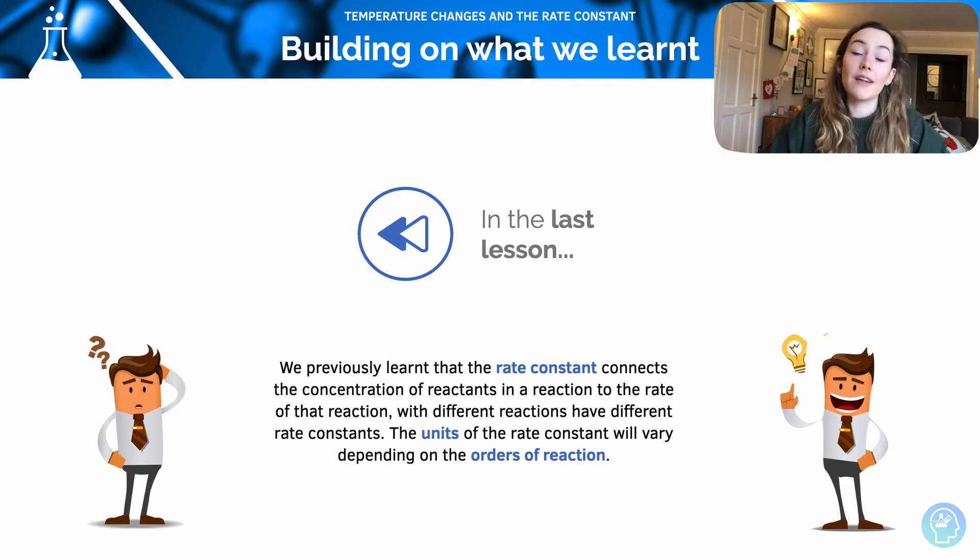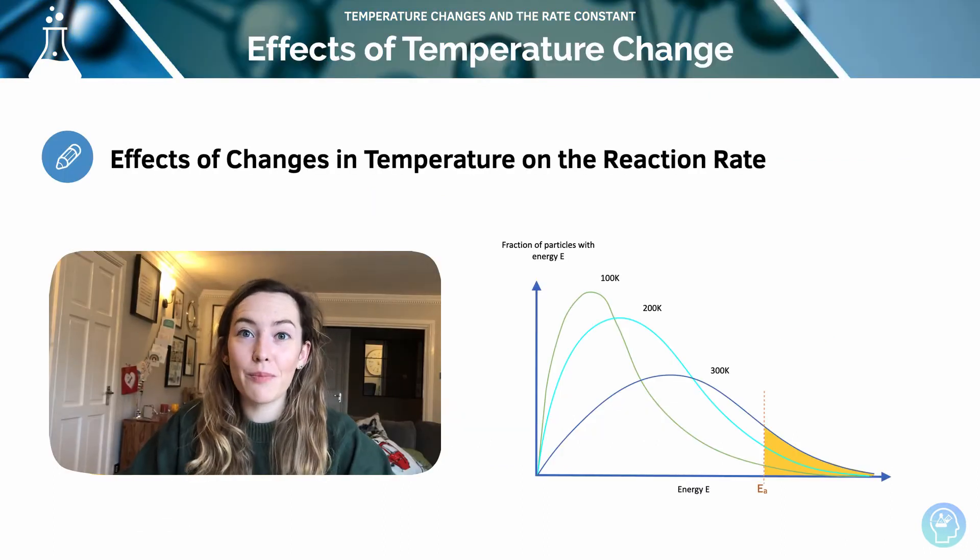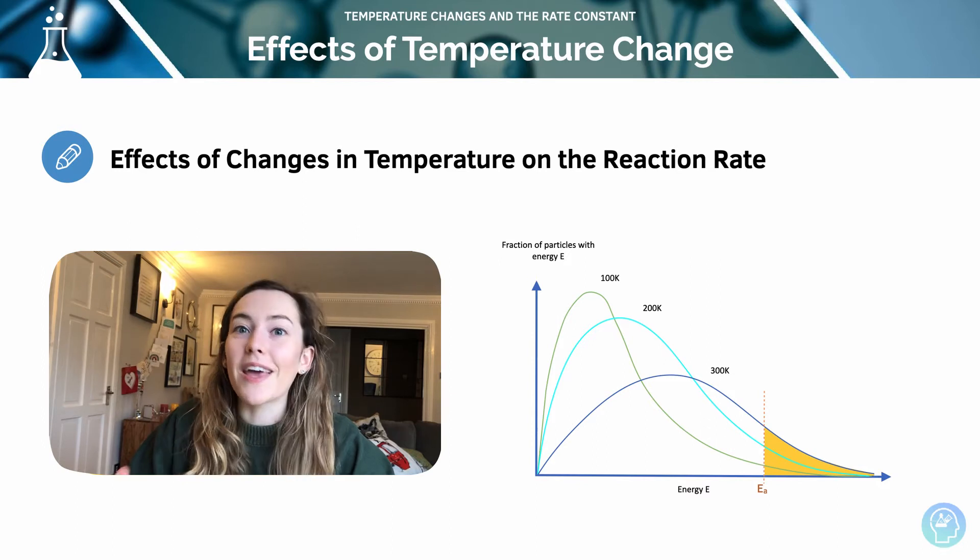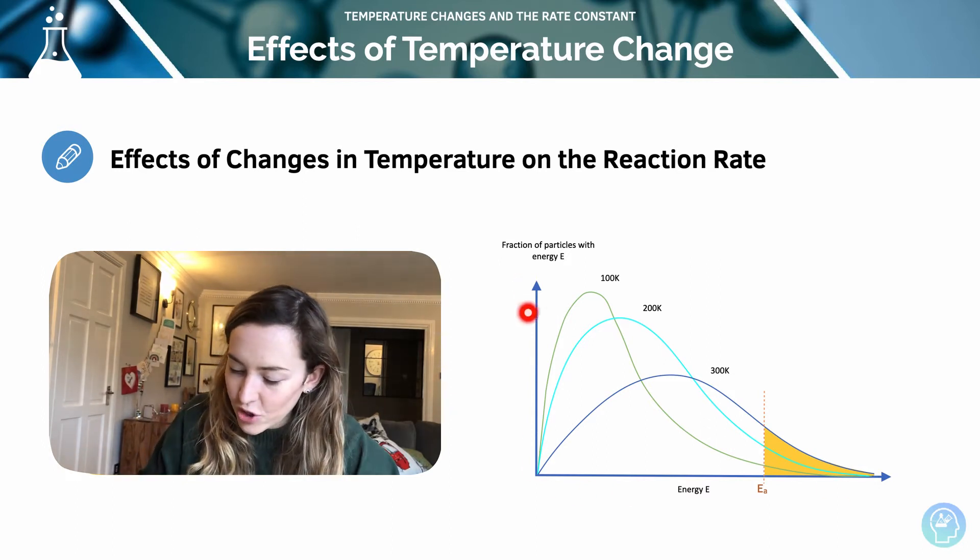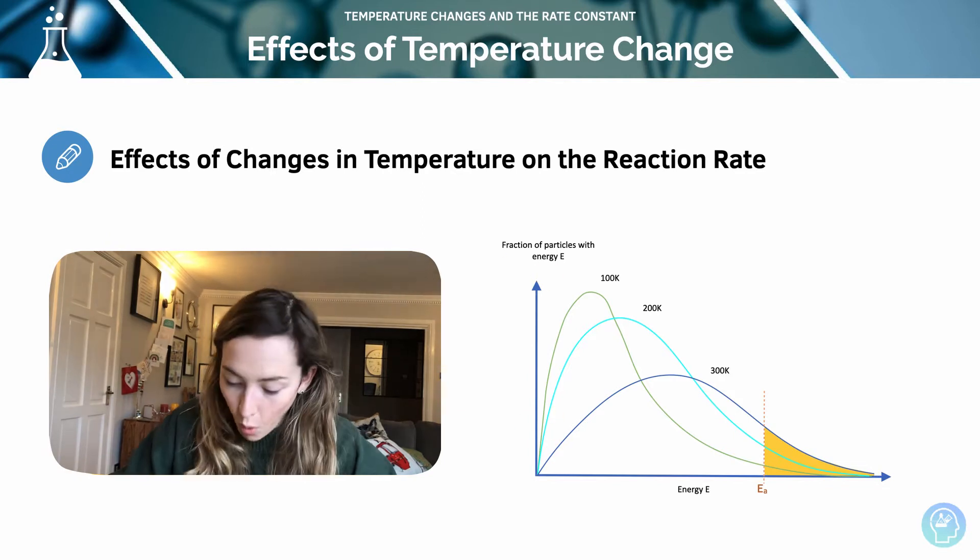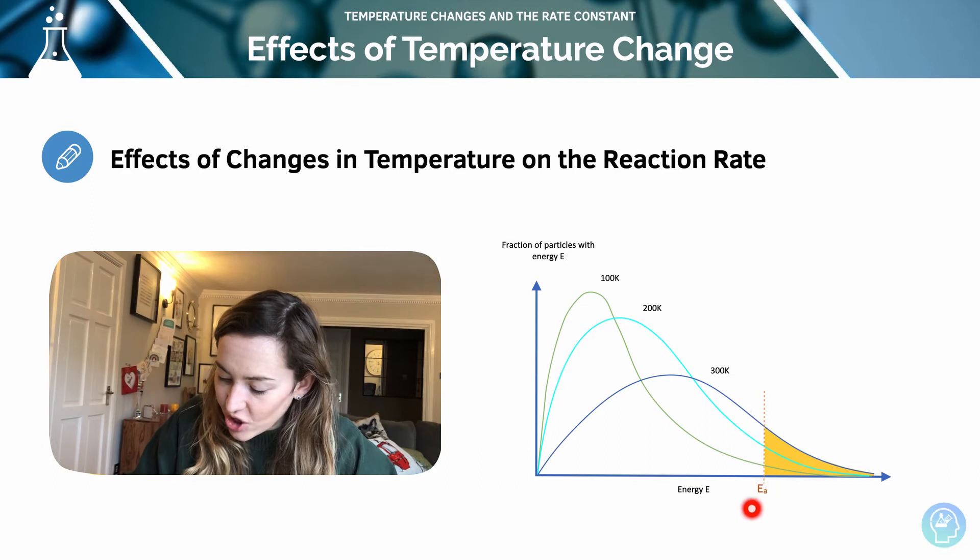So in this lesson we're going to look at the Arrhenius equation. First of all, let's look at how temperature affects the rate of reaction. So here I've got a Boltzmann distribution with my energy on the lower axis and my fraction of particles on my y-axis. We can see I've got my activation energy there, Ea.